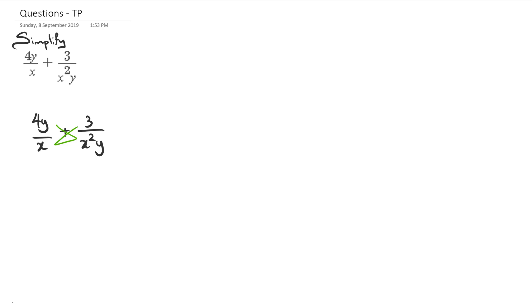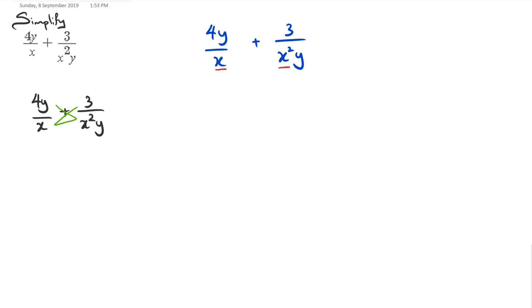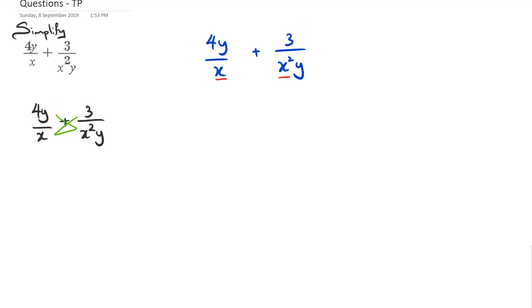So how do we actually do this real easily? What I tend to do is I always write them with a bit of space and I just look at the denominators. At the moment I've got an x here and I've got an x squared in the right hand side fraction's denominator, which means I need to actually have another x on the left hand side.